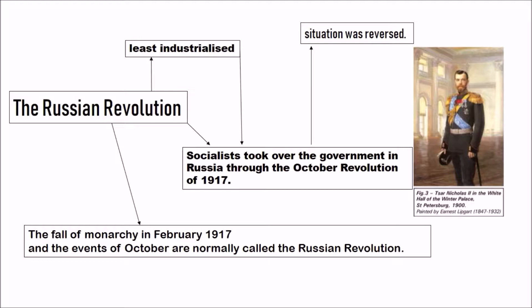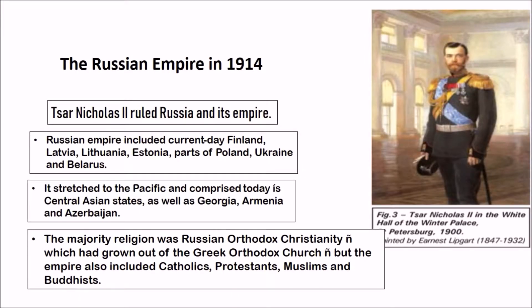The Russian Empire in 1914: Tsar Nicholas II ruled a vast Russian Empire that included present-day Finland, Latvia, Lithuania, Estonia, parts of Poland, Ukraine, Belarus, and stretched to the Pacific, comprising today's Central Asian states, Georgia, Armenia, and Azerbaijan. The majority religion was Russian Orthodox Christianity, which had grown out of the Greek Orthodox Church. The empire also included Catholics, Protestants, Muslims, and Buddhists.